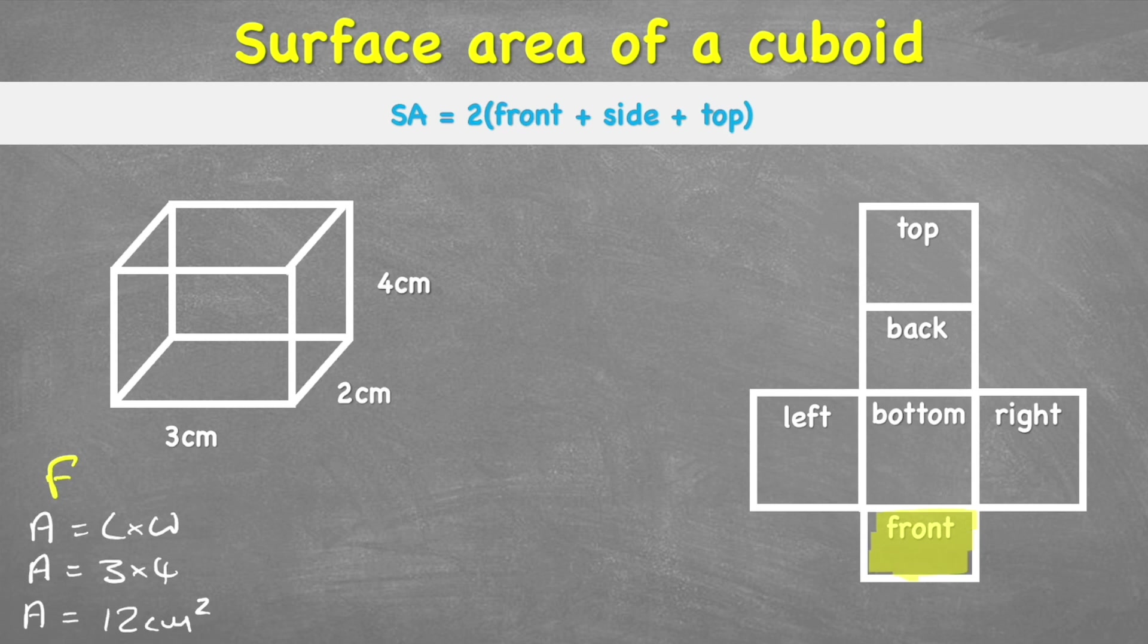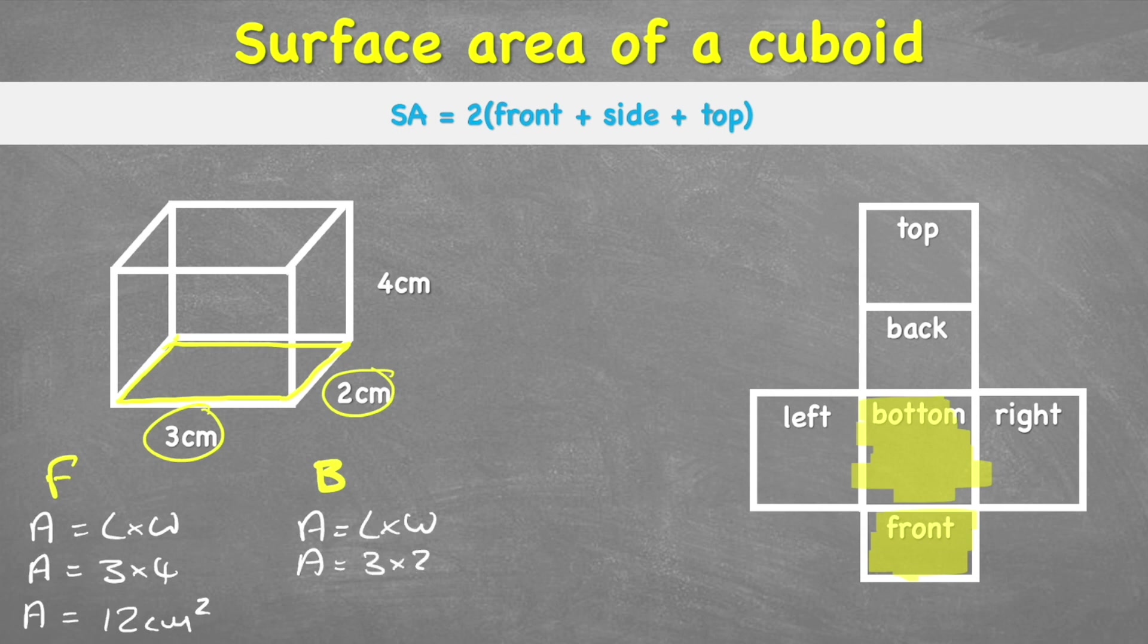Now let's do the bottom. And we can see for our bottom, we're going to be using this shape here, this rectangle, which has measurements 3cm and 2cm. So therefore our area, again, equals length times width. Area equals 3 times 2. And so area equals 6. And again, centimetres squared. Great.